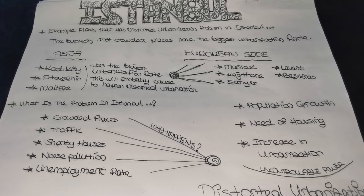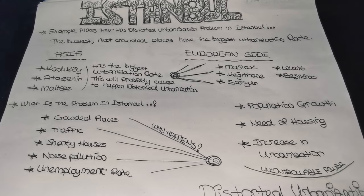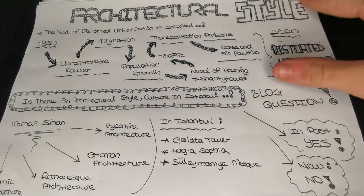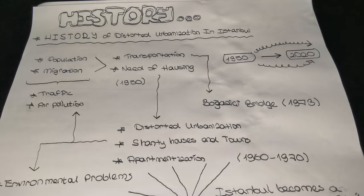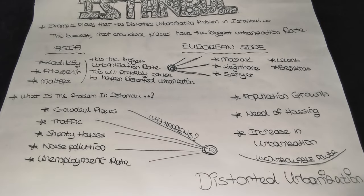This is mainly the relation between the problems of Istanbul and my project. We can avoid this situation — this urbanization problem is really big in Istanbul. We can't eliminate it, but we can work toward a planned system. In the next video I am going to talk about distorted urbanization in Istanbul related with natural resources. In this video I talked about modernization, the architectural style, the history of urbanization in Istanbul, Mimar Sinan, Galata Tower, and Boğaziçi Bridge.